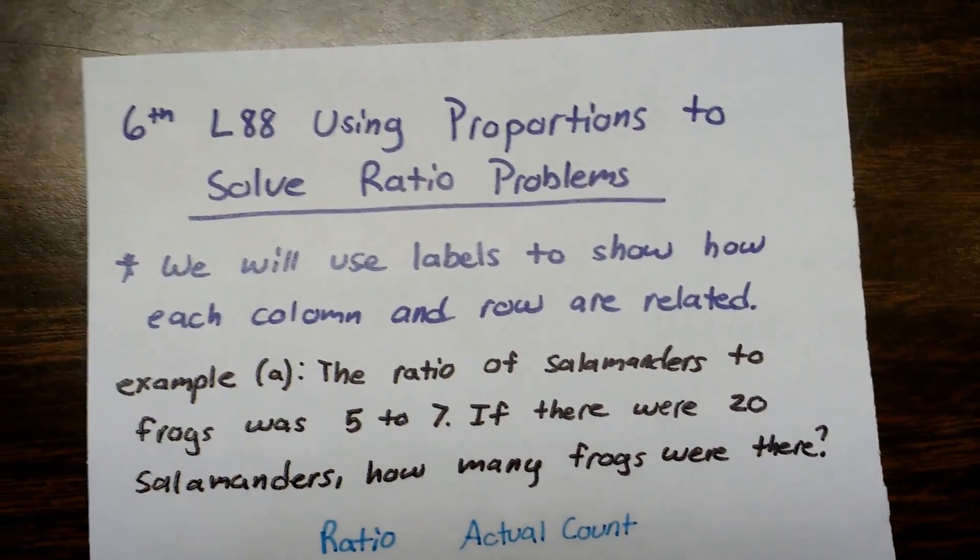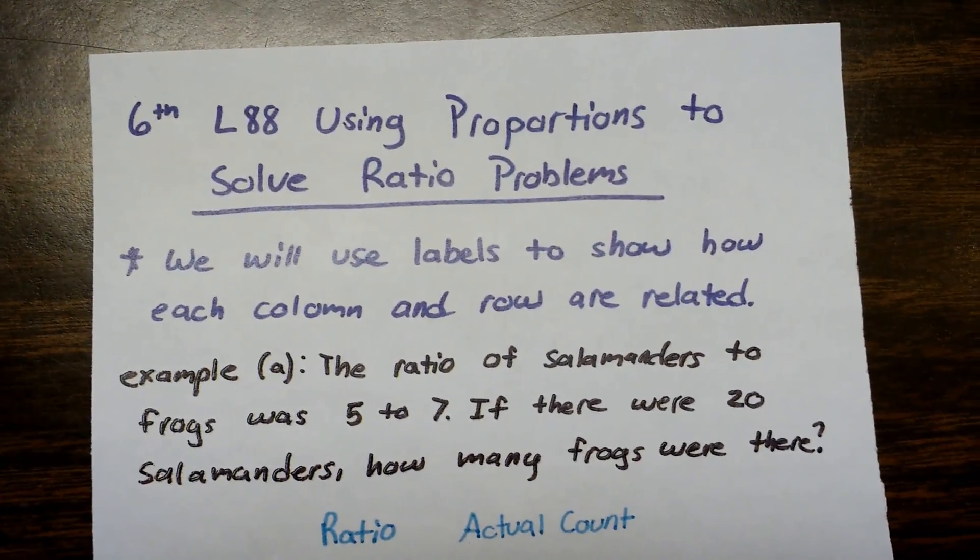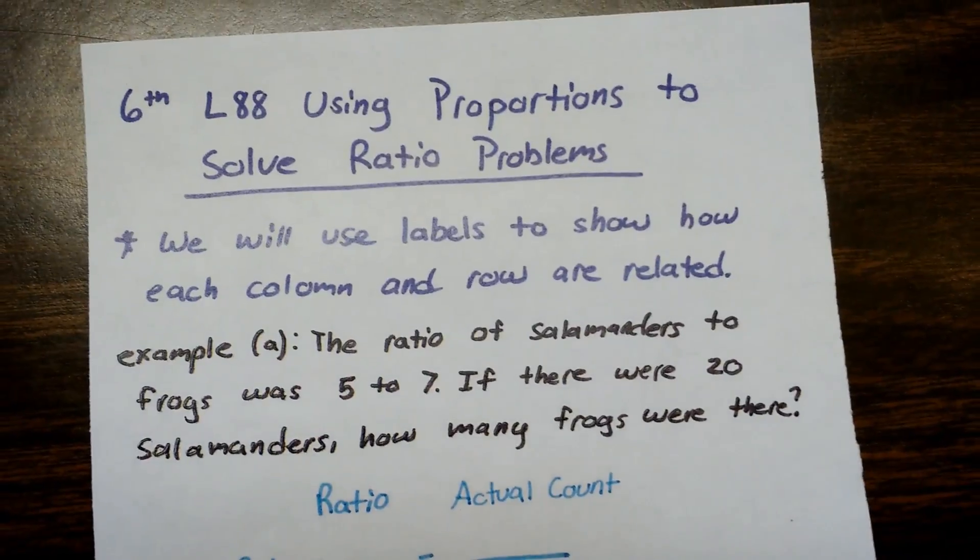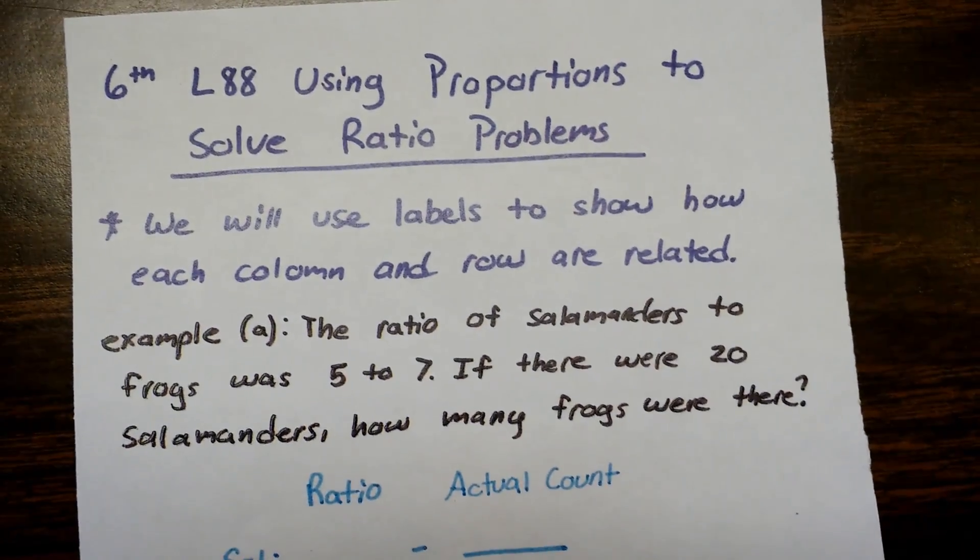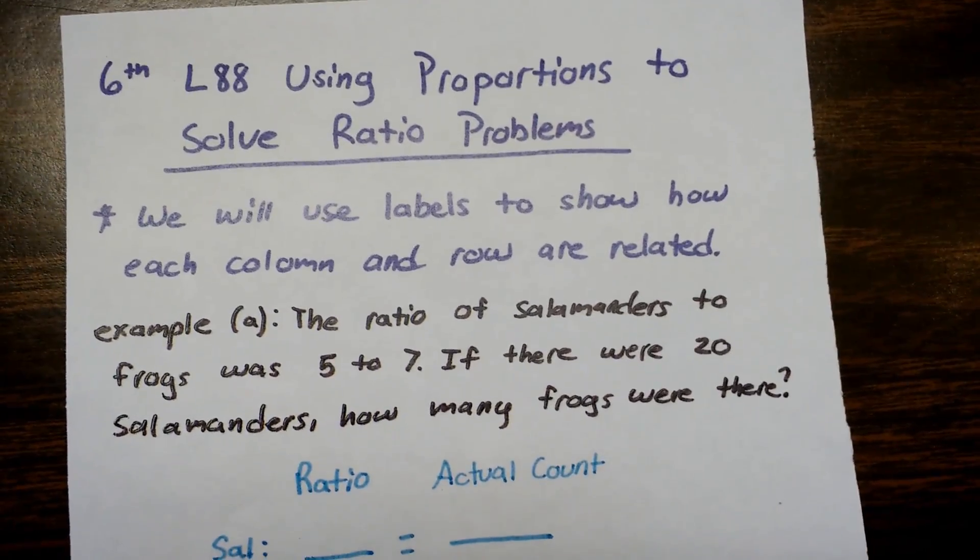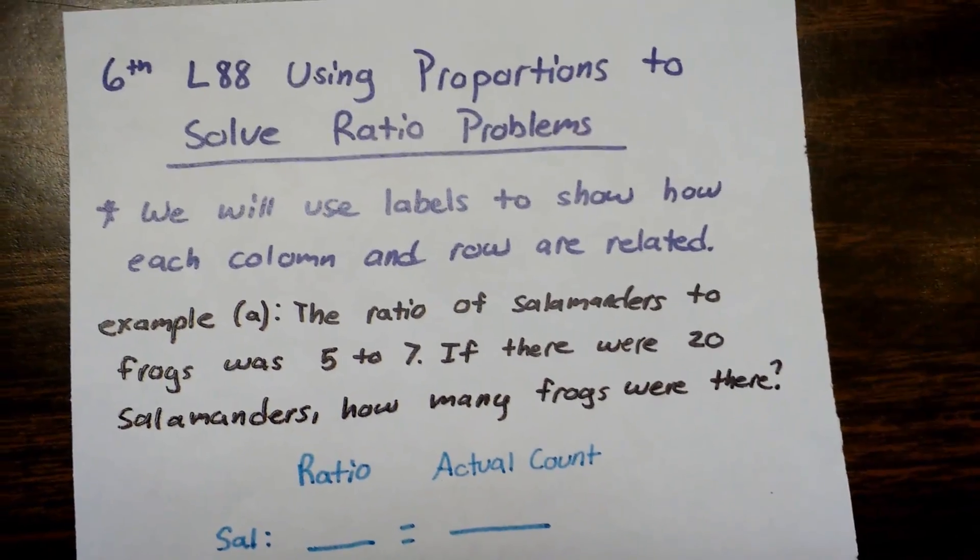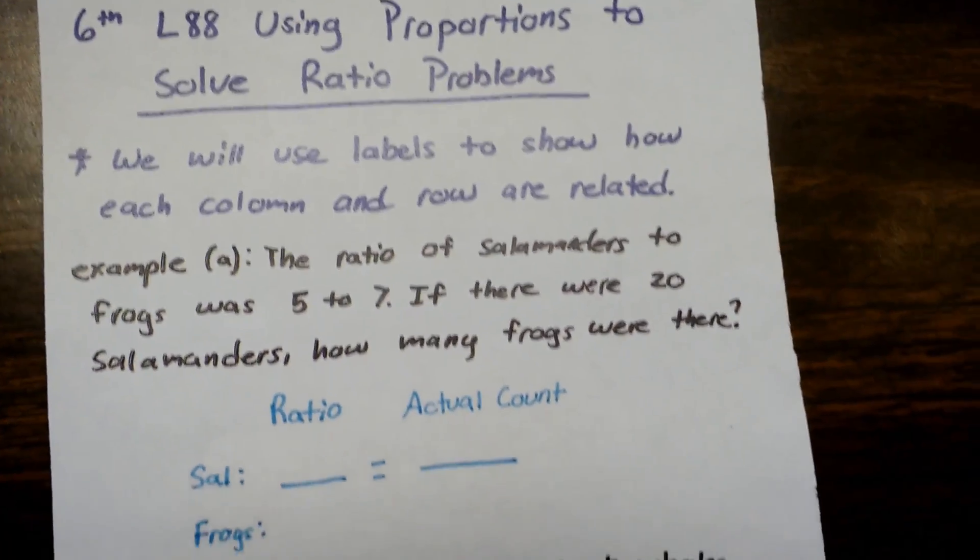We're going to use labels to show how each column and row are related to each other. Basically the whole point is just to get it set up right. Once you have it set up right these are really easy to solve. So the first example says the ratio of salamanders to frogs was 5 to 7. If there were 20 salamanders, how many frogs were there?